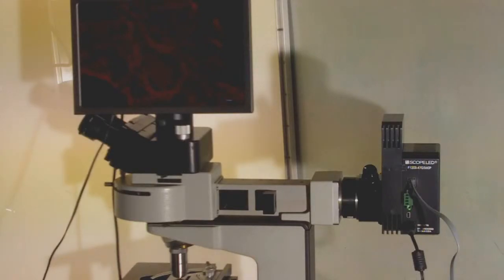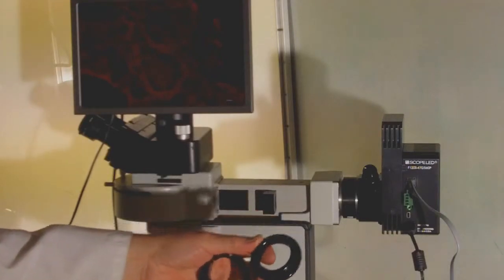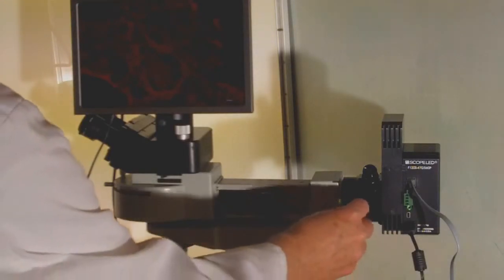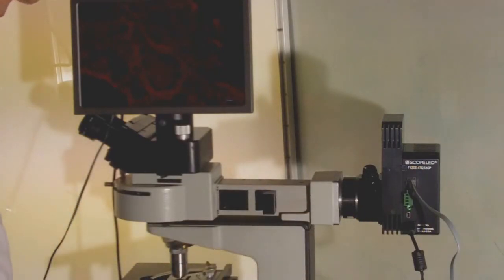It's very easy to adapt with these adapter rings that we use. This is one for a Nikon. This is one for the newer Leitz microscopes, bayonet flange. They simply attach to the front here of the F-Series Scopeled based on the type of microscope that you have. Call Bunton if you have any questions about the Scopeled F-Series LED illuminator made in America.